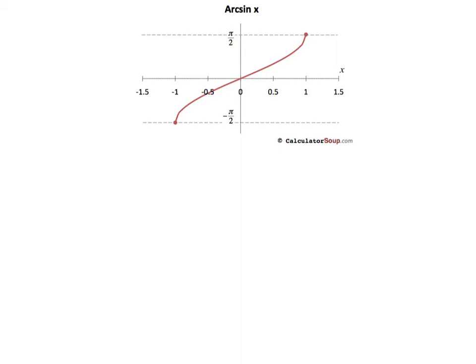The first time we ever introduced you to the graph of inverse sine, or arc sine, what we did is we said we're going to take all of the x values and all of the y values for the sine curve and flip-flop them. So you'll notice we now have our y-axis labeled in terms of π, and our x-axis is labeled in terms of regular whole numbers. And we started flipping all those points, but the problem is that curve started to look like this.